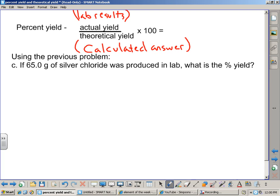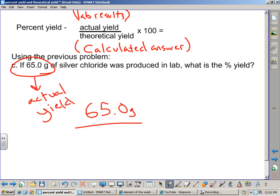Questions? So let's practice it then. Using the previous problem, if 65.0 grams of silver chloride was produced in lab, what is the percent yield? So the number given in this problem we define as our actual yield and our theoretical yield is from the previous step. We take the two numbers and divide them by one another. 65.0 grams divided by our answer from the previous step, 71.7 times 100. 90.7 we got from a couple of people here. Questions about this process?